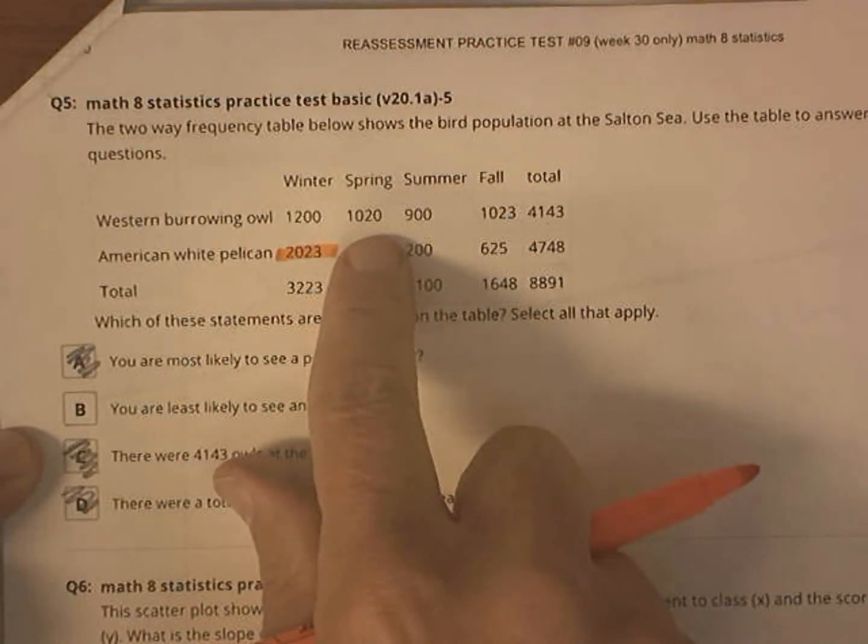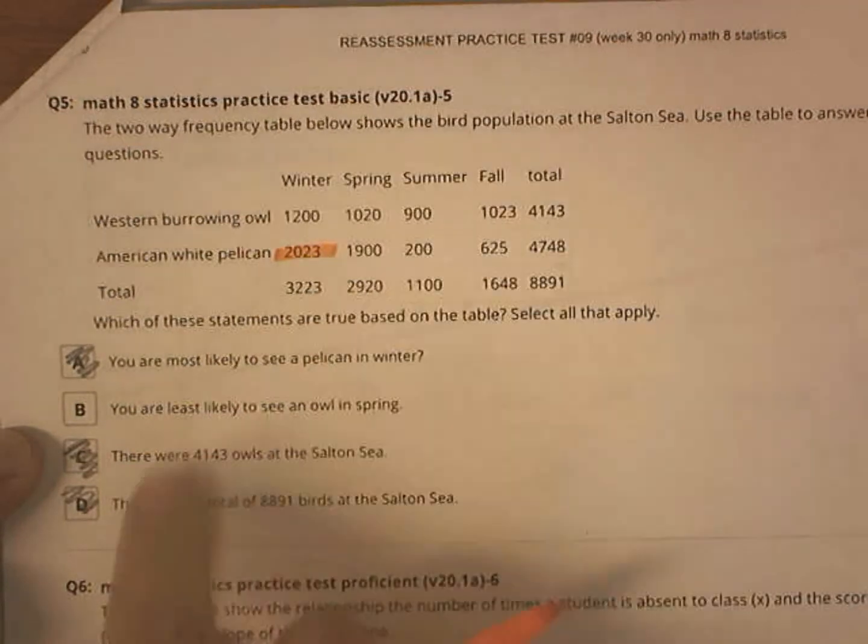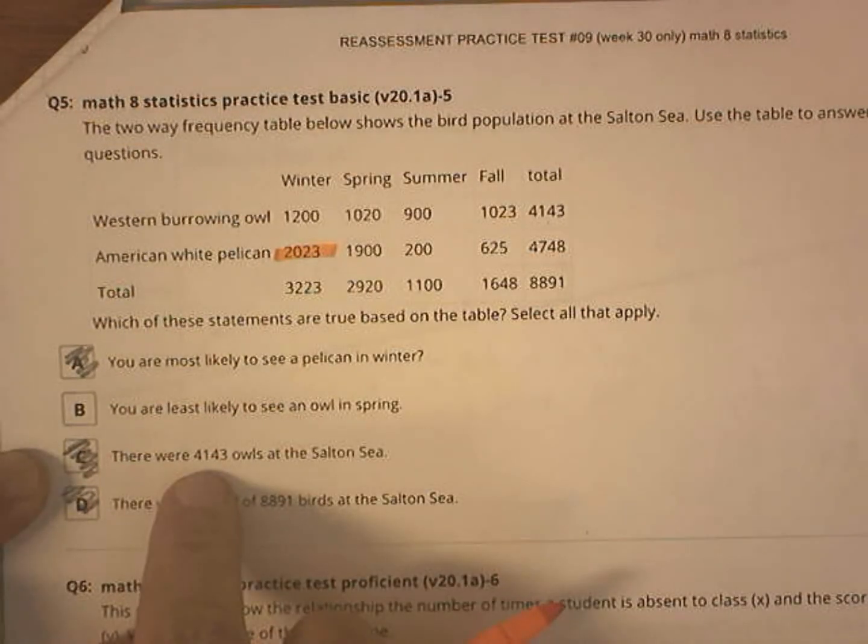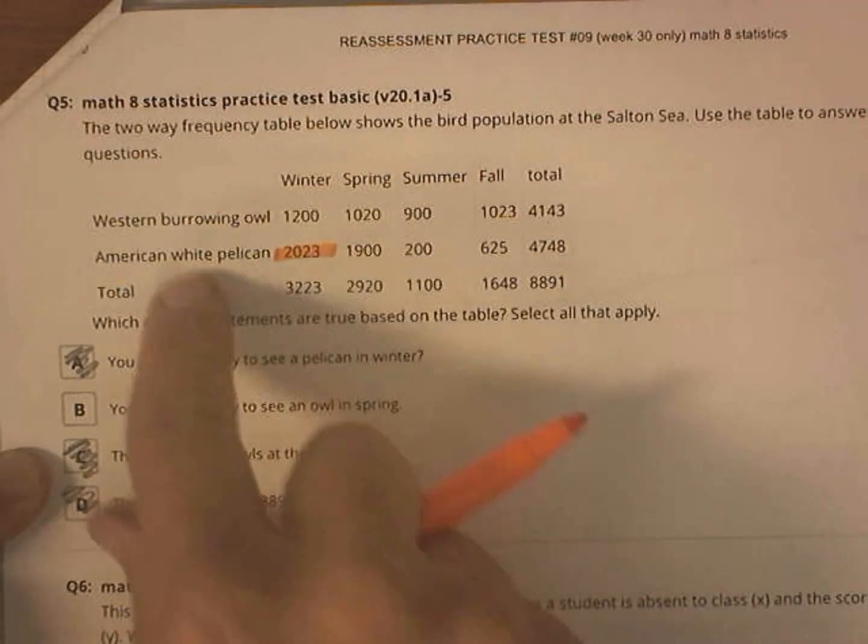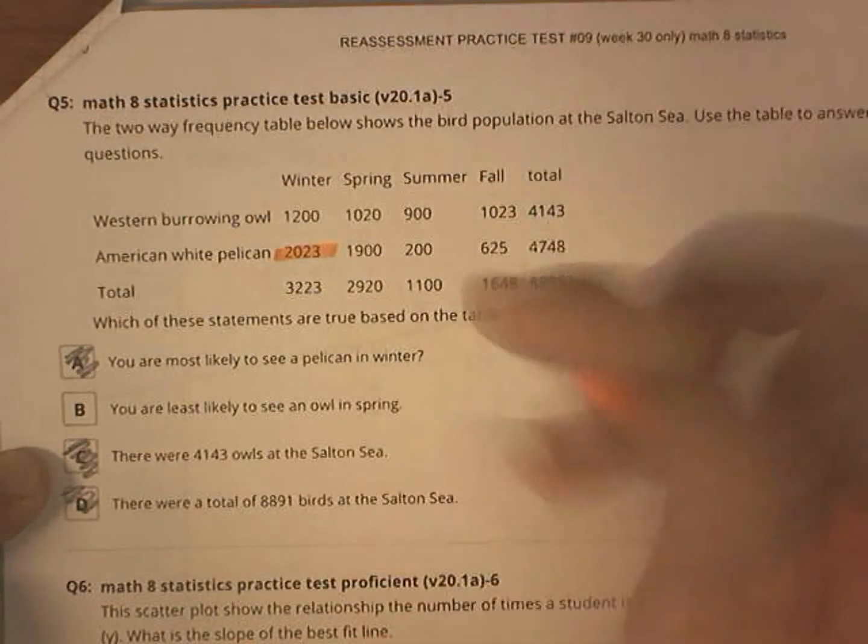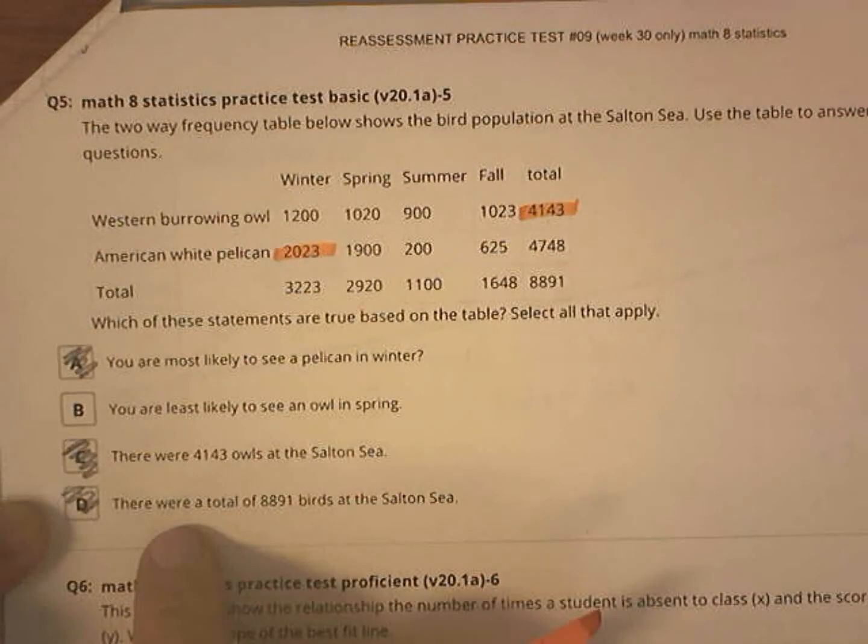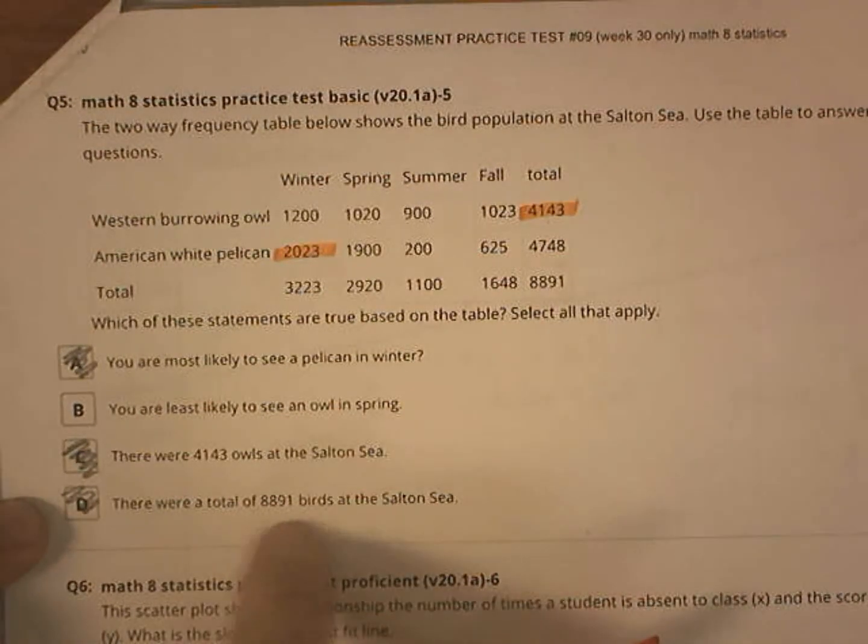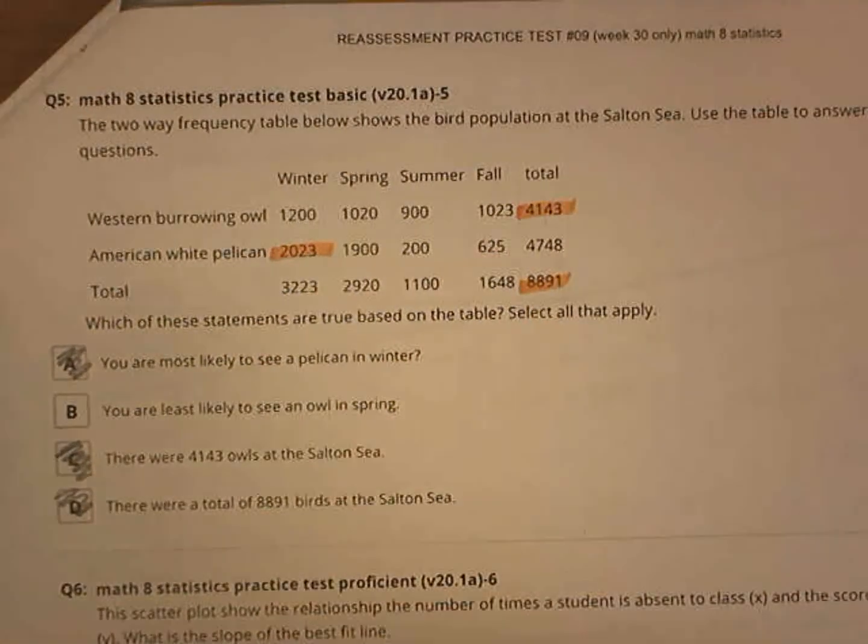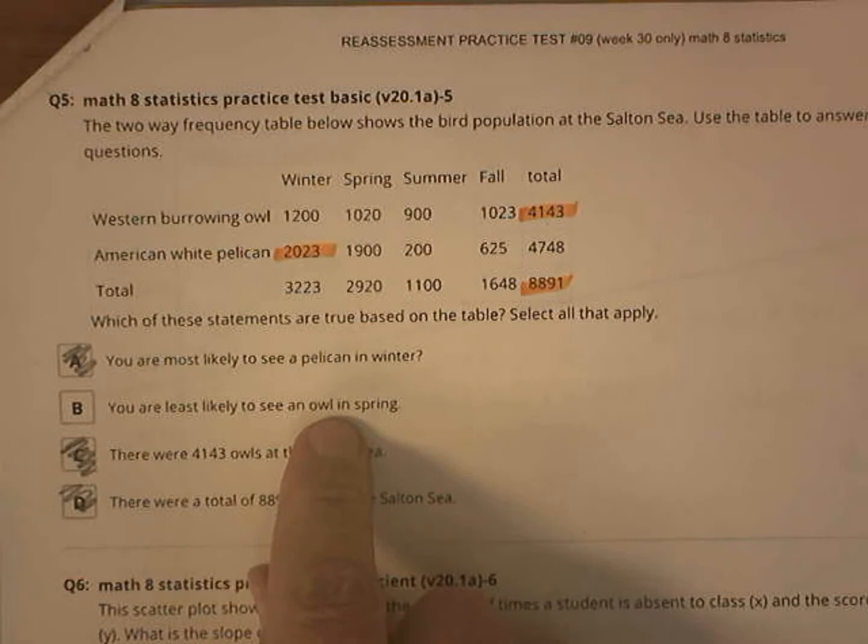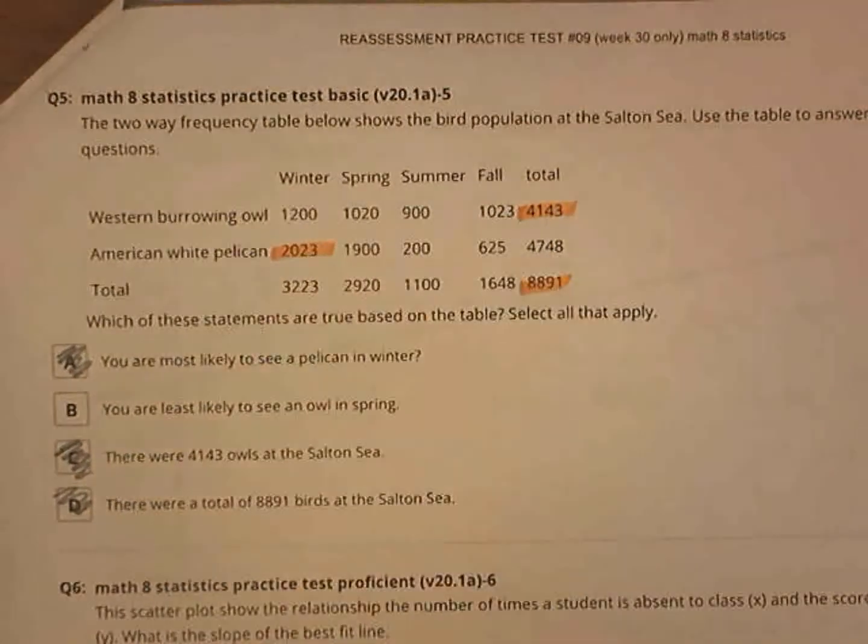You are least likely to see an owl in spring. Owl in spring. Nope. It looks like summer is actually the least likely time to see an owl. There are 4,143 owls at the Salton Sea. Yep, right there. That's right. There are a total of 8,891 birds. Yep, that's true also. So B is the one that's false. You're least likely to see an owl in summer.